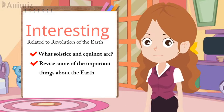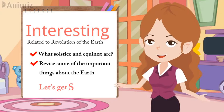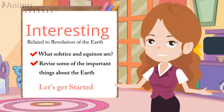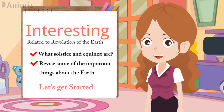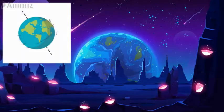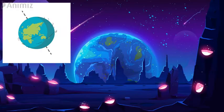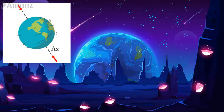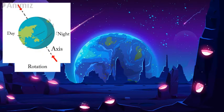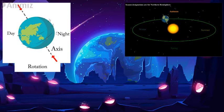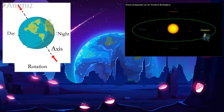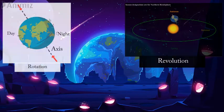Let's get started. We know our earth moves in a tilted position and not exactly upright. It moves around its own axis, which causes day and night, and is called its rotation. The earth also keeps moving around the sun, which causes different seasons, and is called its revolution.